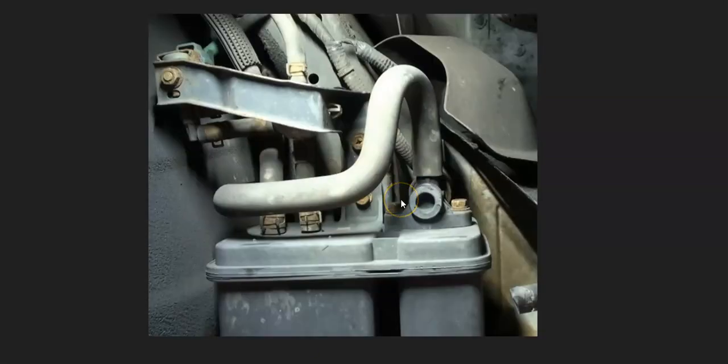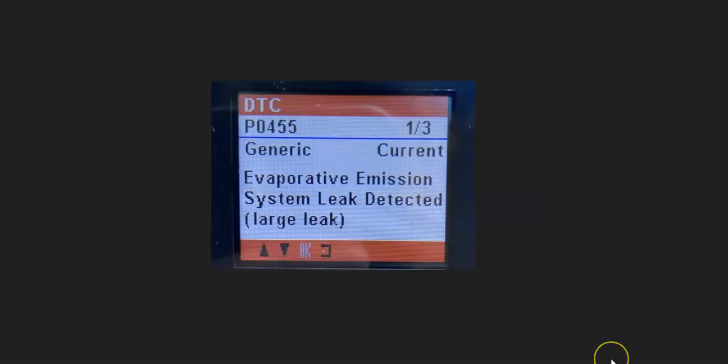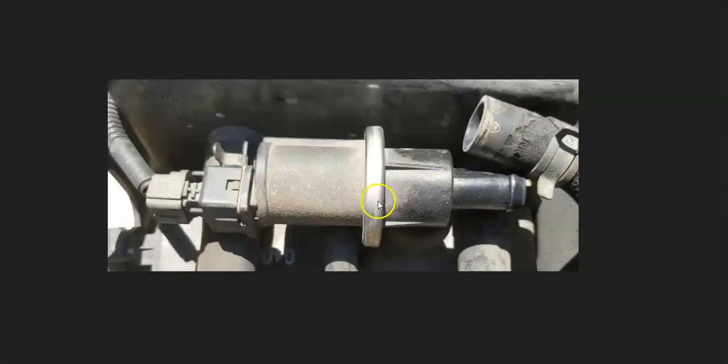How can you go about troubleshooting the charcoal canister? First of all, it's a good idea to scan for any error codes that might be on the computer, because if there is an issue with that charcoal canister, then very likely you can have OBD-2 error codes. For example, if you got a P0455 code, then that often points to a problem with the charcoal canister.